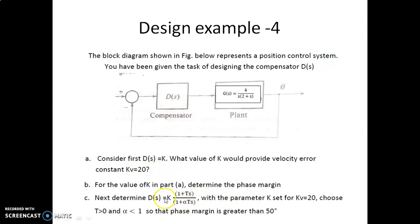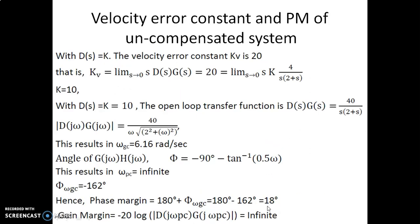With Kv equal to 20, we can find the value of K as 10. We also need to find the phase margin, and then design a phase lead compensator so that the phase margin is greater than 50 degrees. With K as 10, the magnitude of the entire transfer function comes out to be 40 divided by s times (2 plus s).